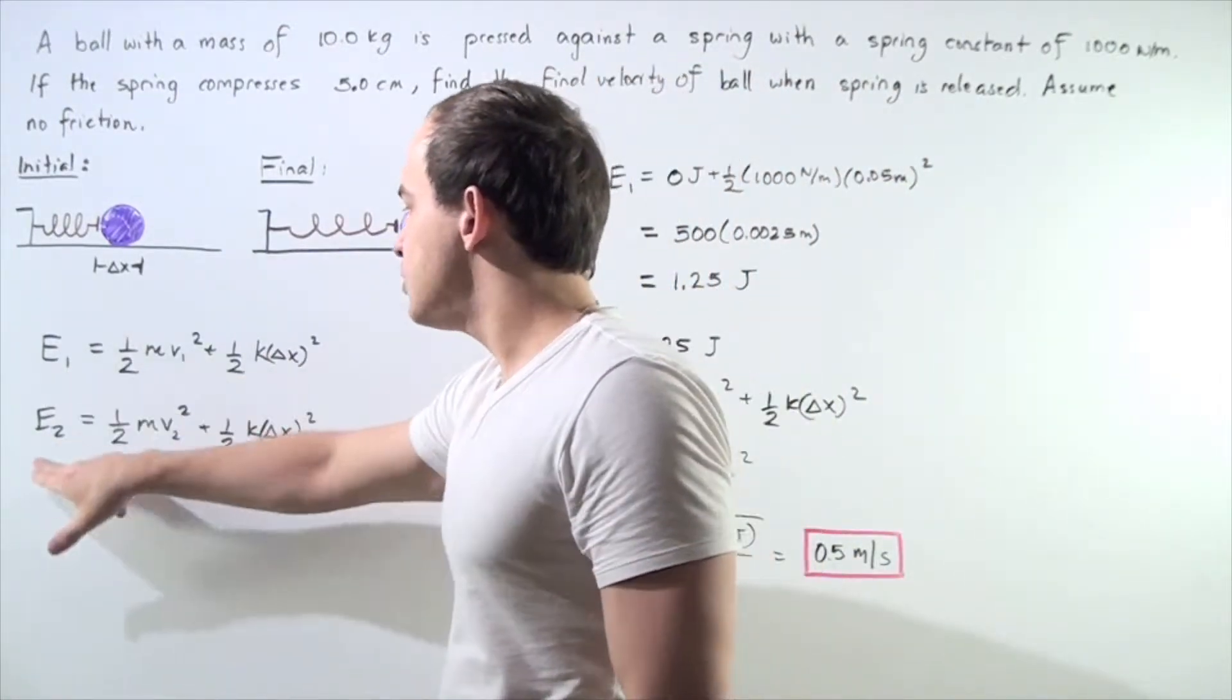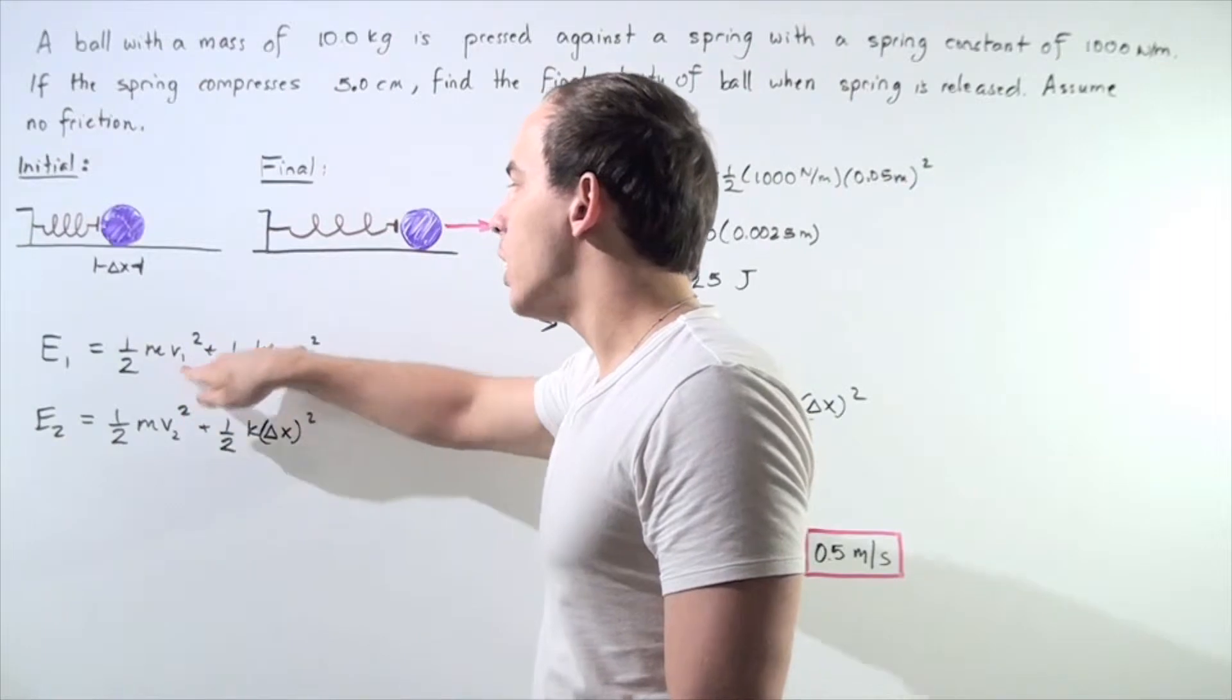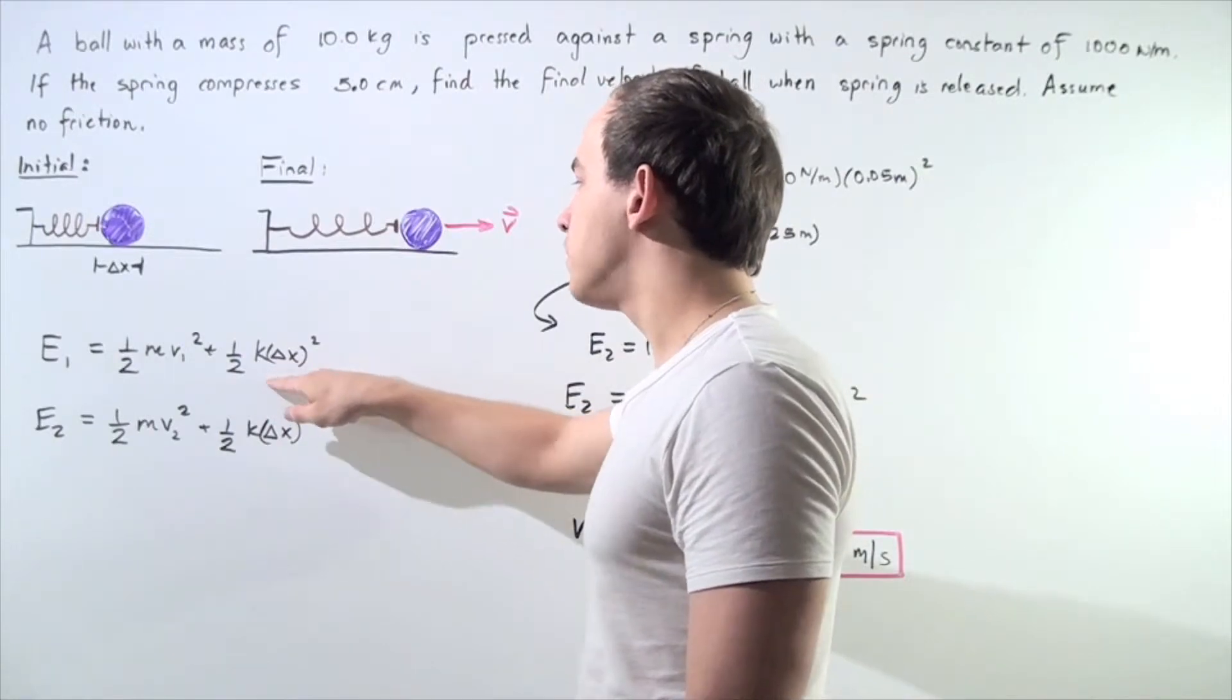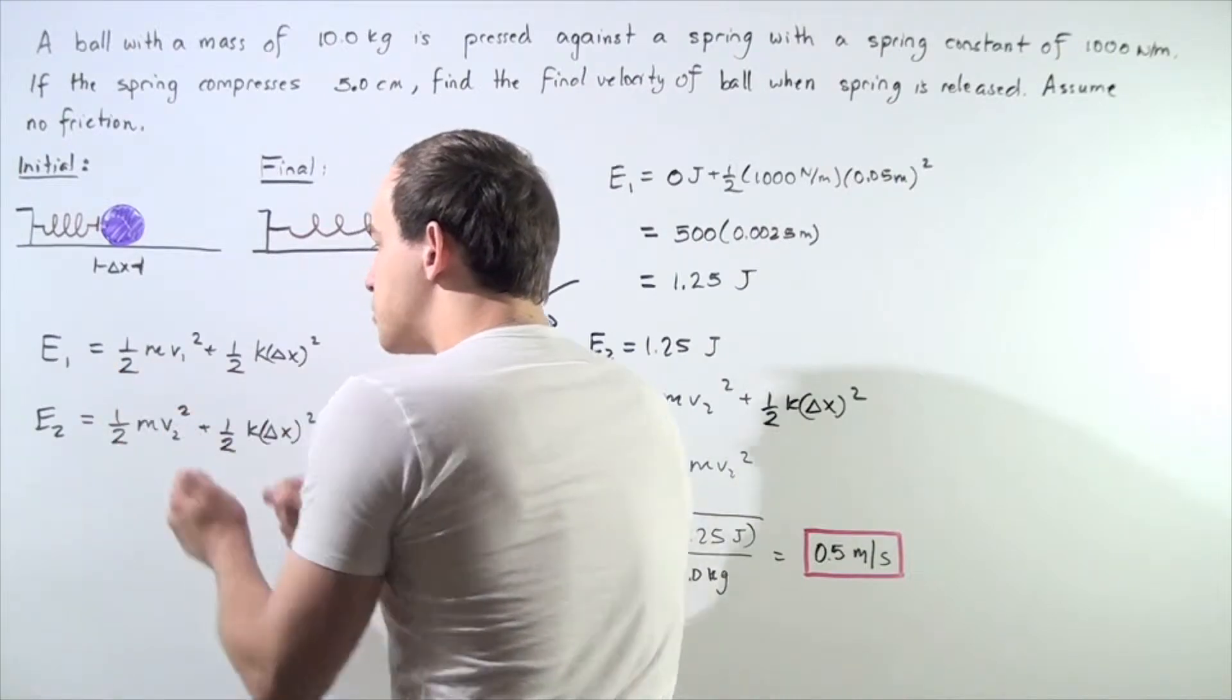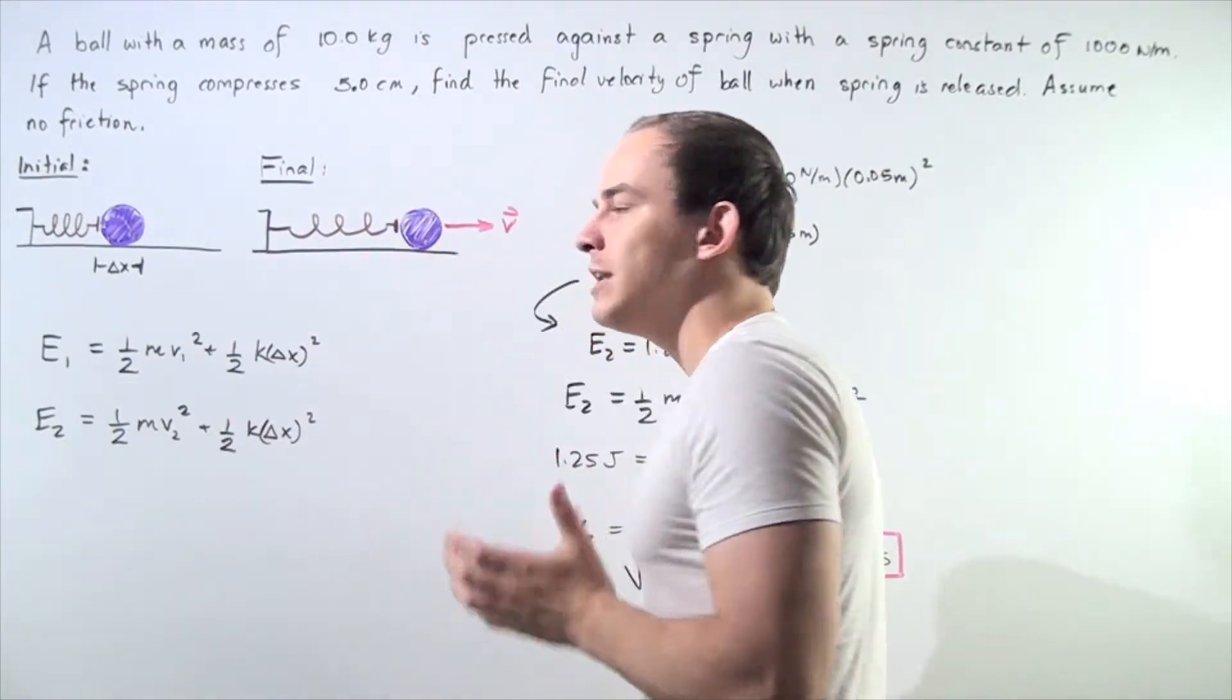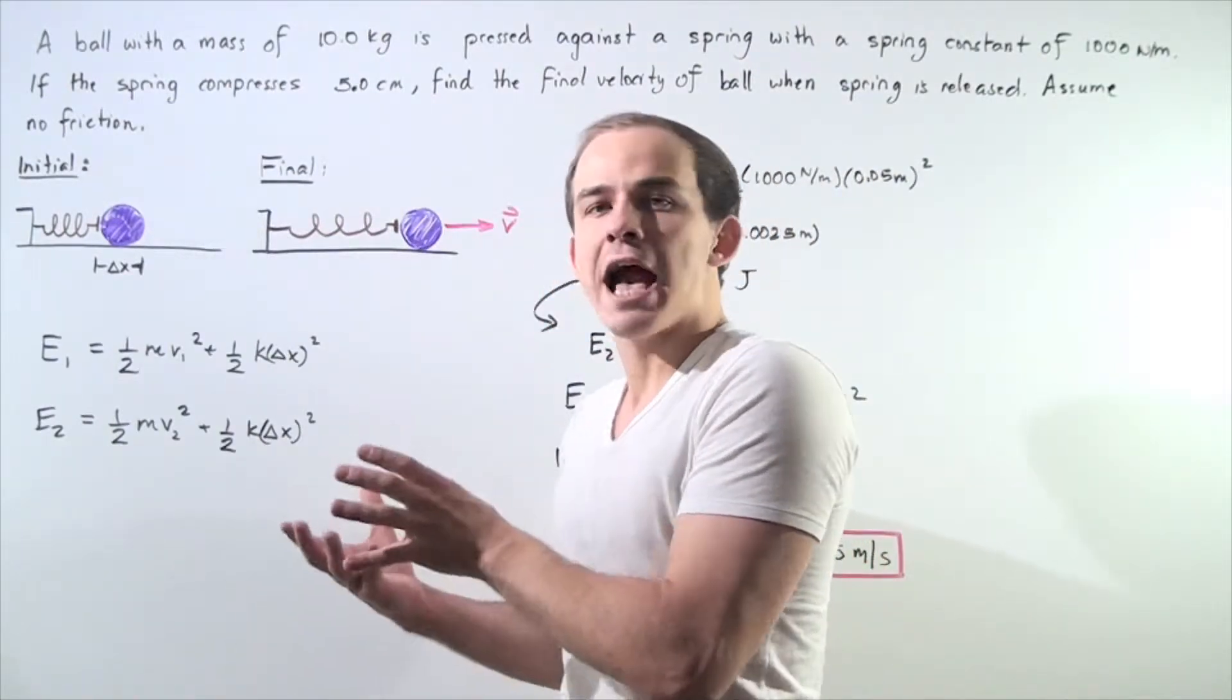So E1 and E2 are given by the following equations. E1 is equal to one-half mass times V1 squared, our initial velocity, plus one-half k times the change in our position squared. So this is the total kinetic energy of our object and this is the total potential energy. And in this example, our potential energy is given in elastic potential energy.